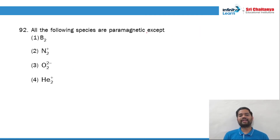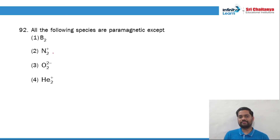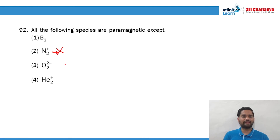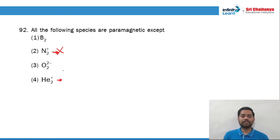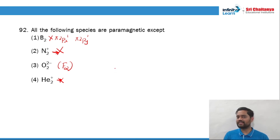Question 92: all the following species are paramagnetic except? N2 is diamagnetic. N2⁺ has one less electron, making it paramagnetic. He2⁺ has an odd electron and is paramagnetic. B2 has π2px¹ and π2py¹, again paramagnetic. O2²⁻ is isoelectronic with F2, and F2 is diamagnetic. Hence option 3 (O2²⁻) is the right answer — it is not paramagnetic.